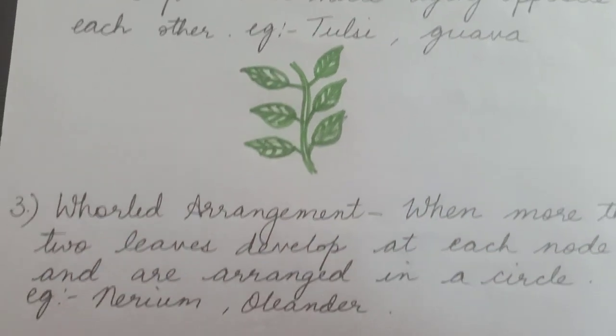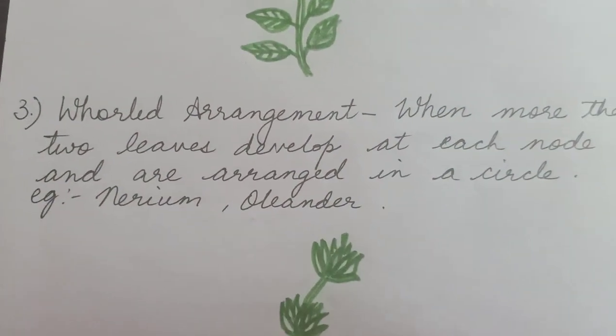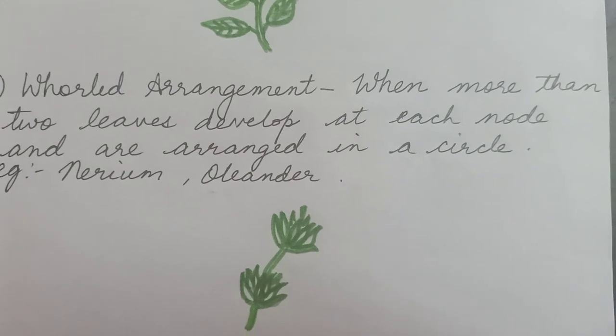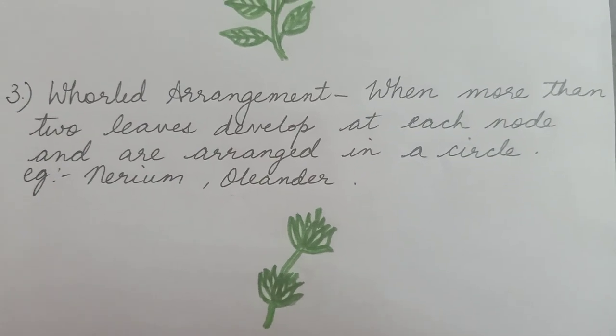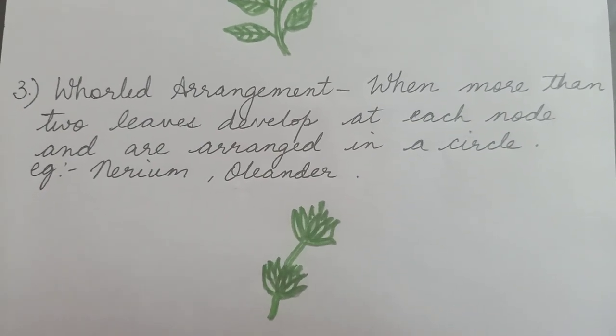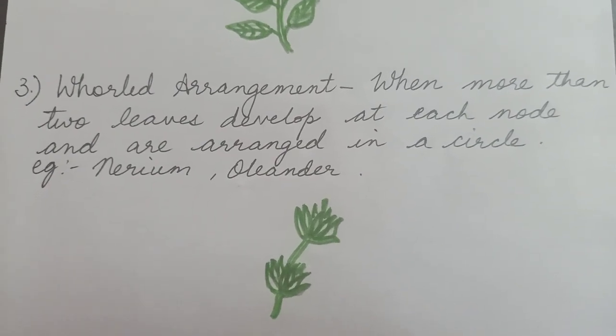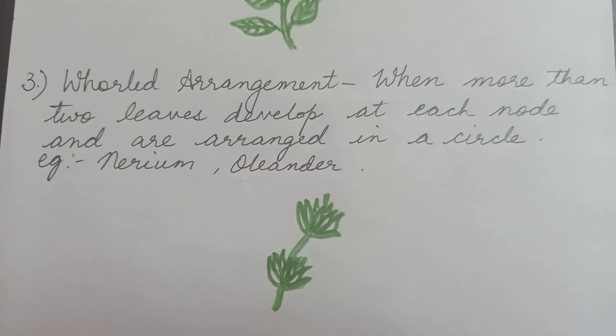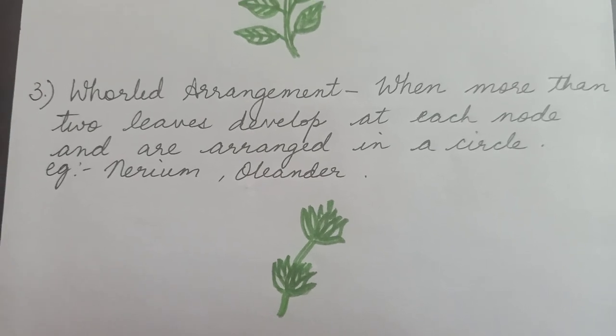The third type of arrangement is known as whorled arrangement. When more than two leaves develop at each node and are arranged in a circular manner, it is called whorled arrangement.